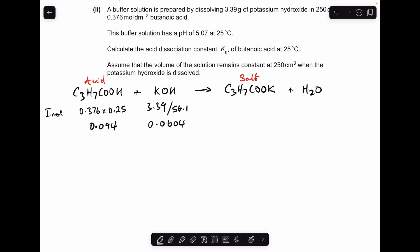Moving on to the potassium hydroxide, we've got the mass of that so the moles is mass over Mr, which is 0.0604.